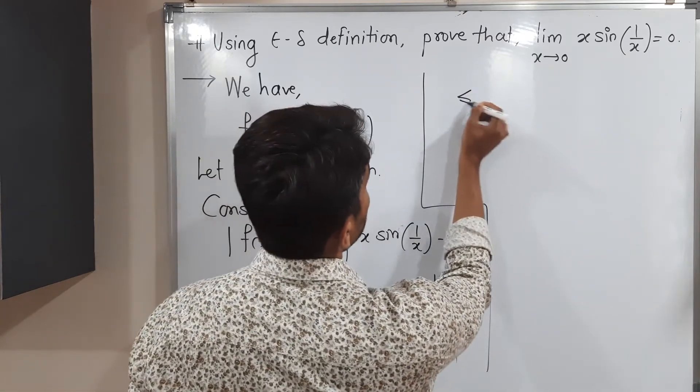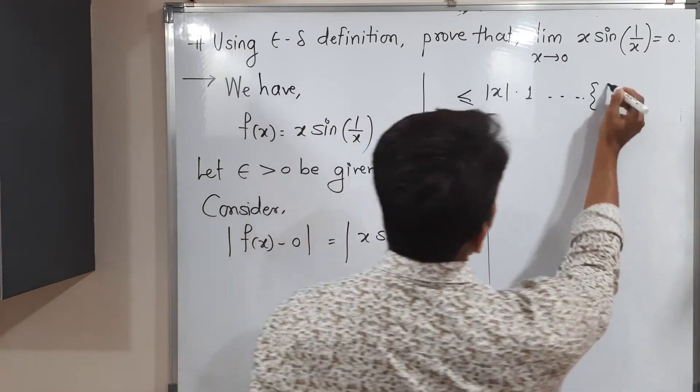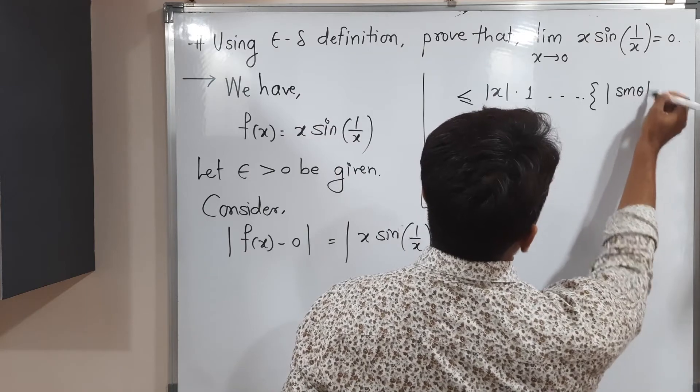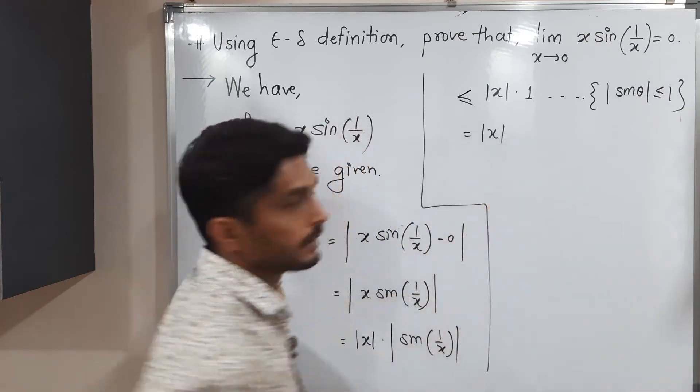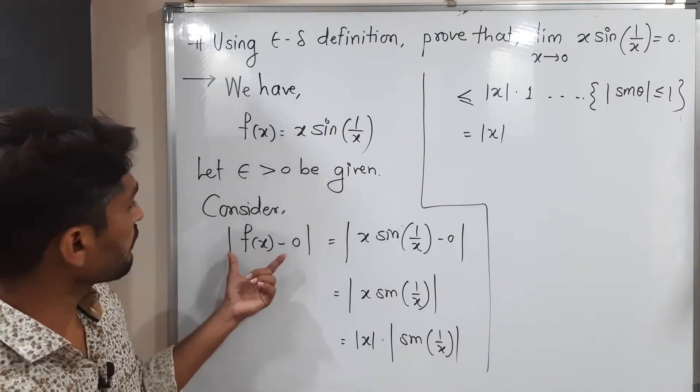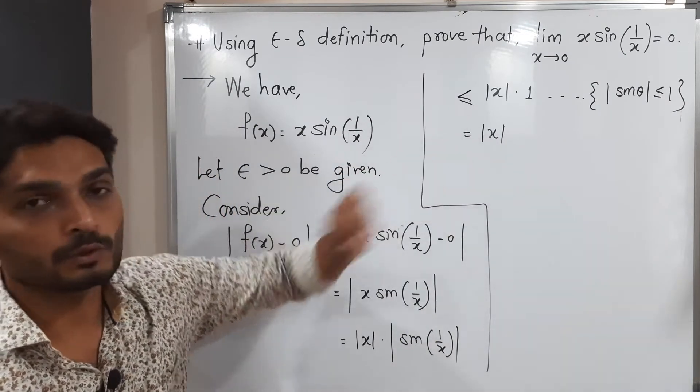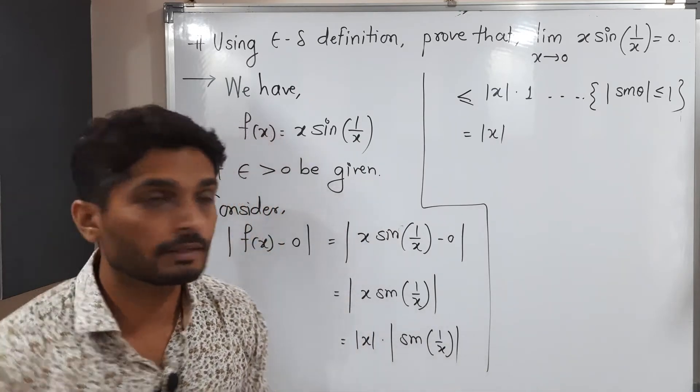So I can write this is less than or equal to mod x into 1, because mod sin theta is less than or equal to 1. So this is equal to mod x. A very important thing we have shown. Mod of f of x minus 0 is less than or equal to mod x.